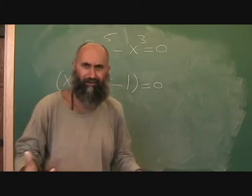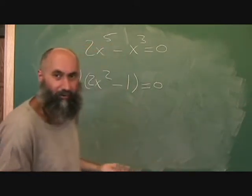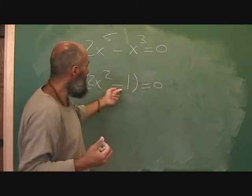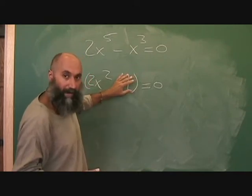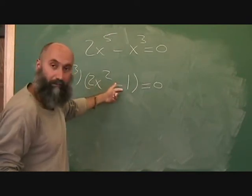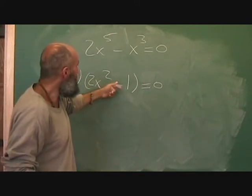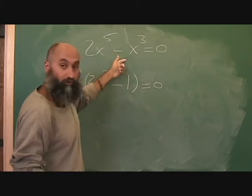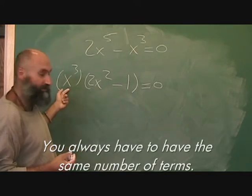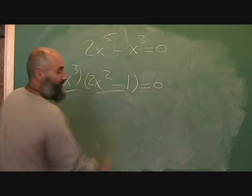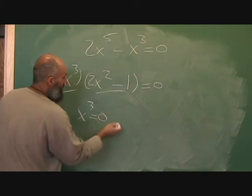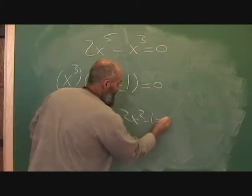My analogy that seems to stick with people: if you go to a movie theater with a friend and your friend goes to the washroom, you still keep their spot — you don't give it away. Your friend is still there; they're going to come back. So always remember: if you start off with multiple terms and you're taking out a GCF, you always have to have the same number of terms. Now we have two things that multiply to give zero, so we set each one equal to zero: x cubed equals zero, and 2x squared minus 1 equals zero.